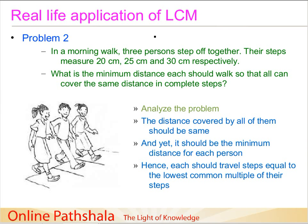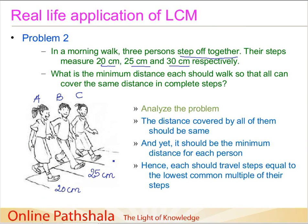The problem is: in a morning walk, three persons start and step off together. Their steps are different sizes — 20 centimeters, 25 centimeters, and 30 centimeters respectively. Let's call them person A, person B, and person C, with step sizes of 20 cm, 25 cm, and 30 cm.